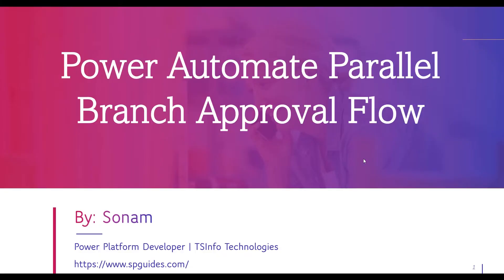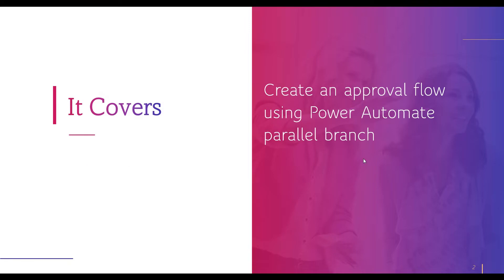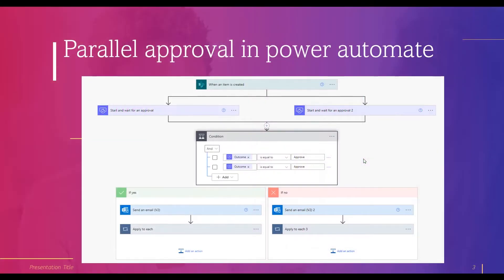We will create an approval flow using a parallel branch in Power Automate, sending an approval request to both a manager and an HR. If both approve, it will send an email notification to the person who created the request and update the approval comments and status in a SharePoint list. If either one rejects, it will be counted as rejected — both must approve for final approval.